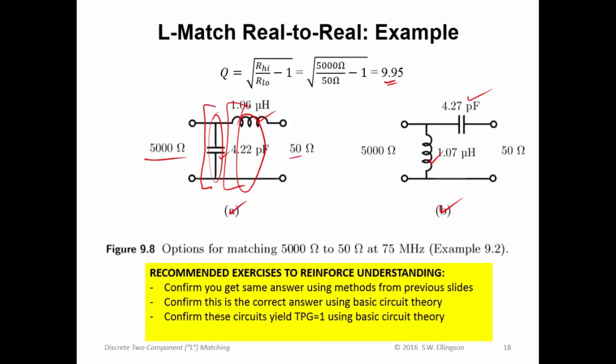So you should be able to confirm these answers, and you can use that doing the MATLAB script that I suggested writing in a previous slide. You can confirm these circuits yield TPG, transducer power gain, equal to 1, using basic circuit theory. You don't have to use S parameters. You could just do basic circuit theory to determine the power delivered to the load, the power available from the source, and then the ratio is the TPG. And you can also confirm these circuits yield TPG using S parameter methods, as I suggested on a previous slide. So these are all ways that you can reinforce understanding, make sure you understand everything that's happening here.